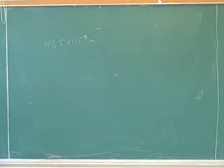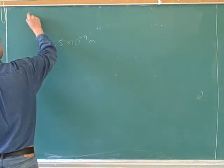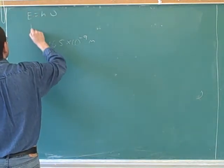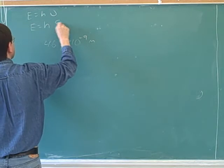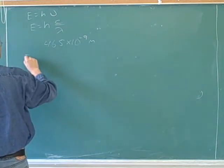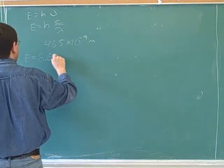So you know E equals h nu. Right. So E equals h times c over lambda, and now you know lambda.